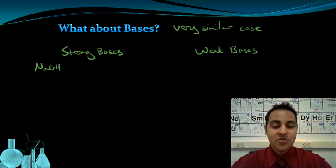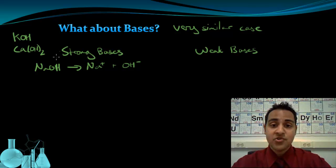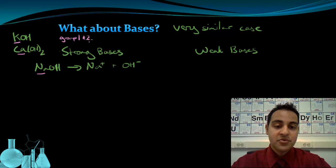So NaOH is an example of a strong base, a very common example of a strong base. And it's going to completely dissociate into Na plus and OH minus. Other examples of strong bases are potassium hydroxide and calcium hydroxide. And there's kind of a nice rule of thumb about strong bases. The OH ion, the hydroxide ion, when combined with a group 1 or group 2 metal, is usually going to be a strong base. So you can see that potassium, calcium, and sodium are all either group 1 or group 2 metals. So strong bases are typically group 1 or group 2 metals with hydroxide.